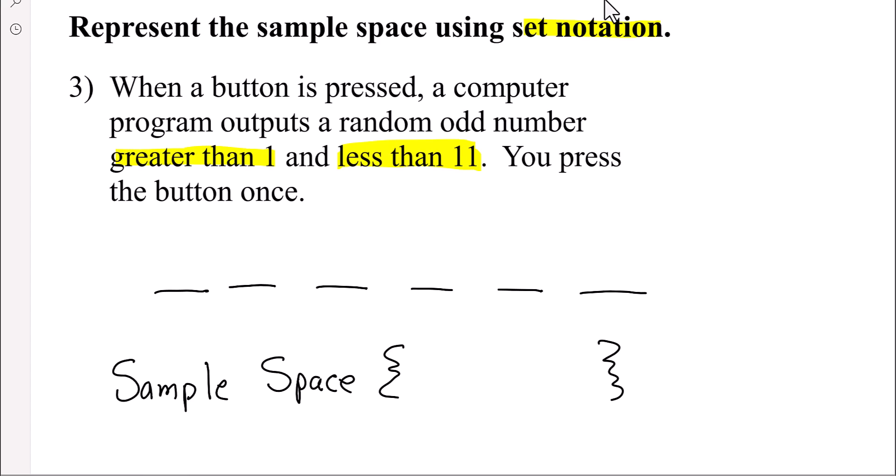So here's an example. When a button is pressed, a computer program outputs a random odd number greater than 1 and less than 11. So let's just write the odd numbers. So 1, 3, 5, 7, 9, 11. But look at what it says. Greater than 1, less than 11. So those are the odd numbers.